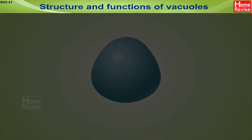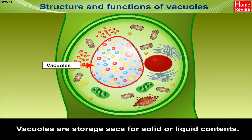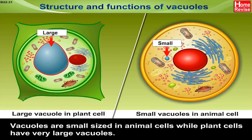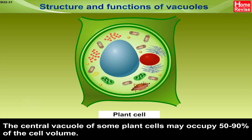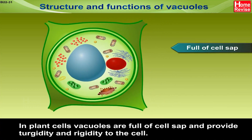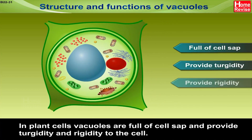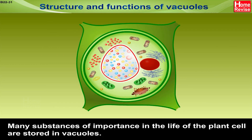Structure and Functions of Vacuoles. Vacuoles are storage sacs for solid or liquid contents. Vacuoles are small sized in animal cells, while plant cells have very large vacuoles. The central vacuole of some plant cells may occupy 50 to 90 percent of the cell volume. In plant cells, vacuoles are full of cell sap and provide turgidity and rigidity to the cell. Many substances of importance in the life of the plant cell are stored in vacuoles.